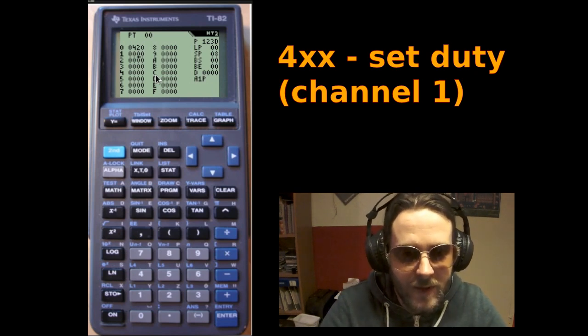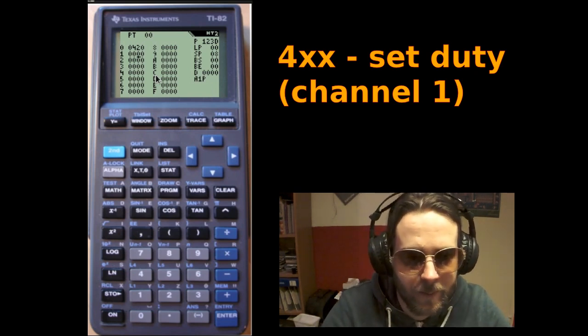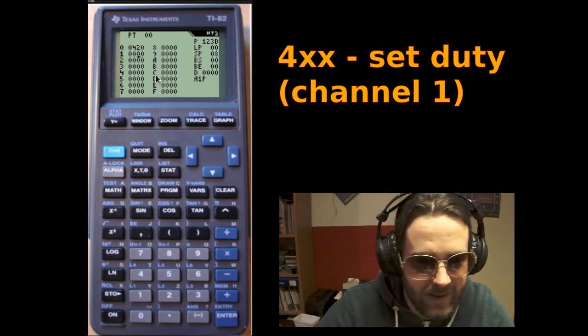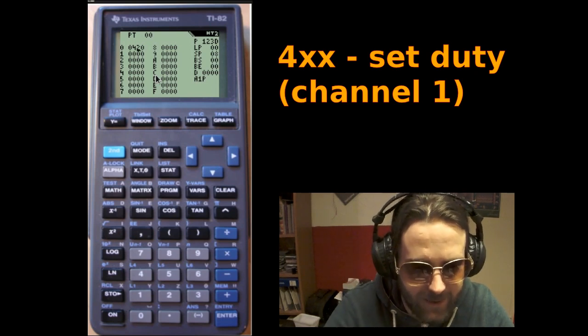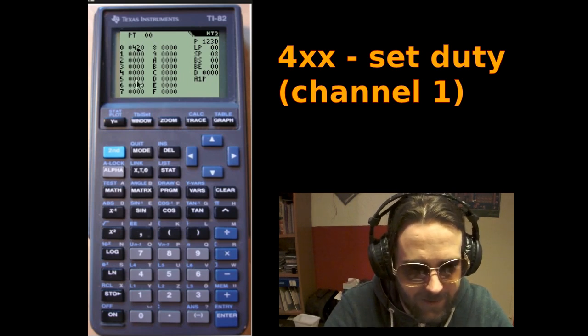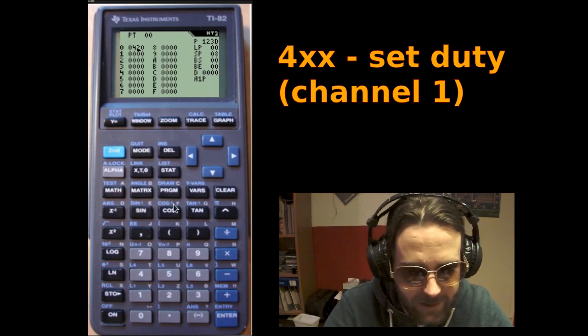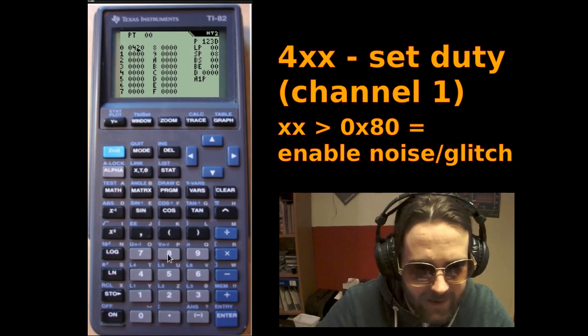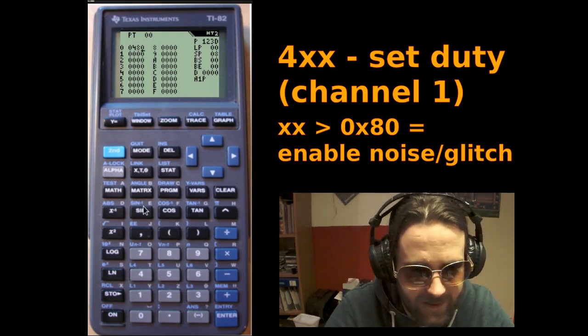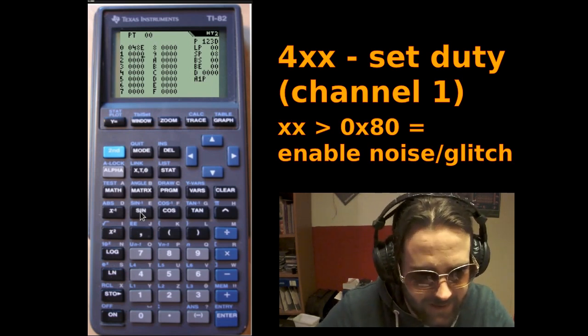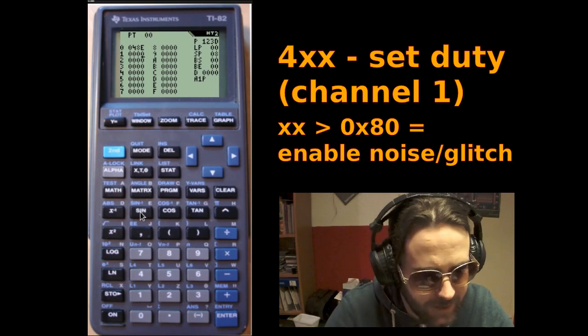Nice gritty sound. A nice thing about the 4xx command is that you can combine it with what was previously the a01 command, like this glitchy noisy kind of stuff. In order to do so, you have to set the duty value to a value higher than hex 80.